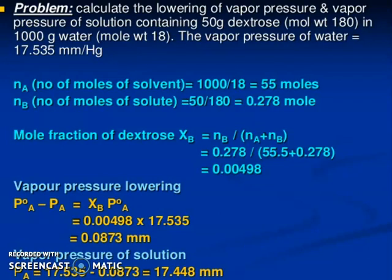Now I will discuss here one problem. This problem will give you some insight about this theory. Calculate the lowering of Vapor Pressure and Vapor Pressure of solution containing 50 gram dextrose. You know dextrose is a very well known medicine, fluid. Dextrose, you know, molecular weight 180, in 1000 gram water, molecular weight 18. The Vapor Pressure of water equals 17.535 mmHg.